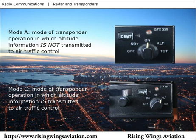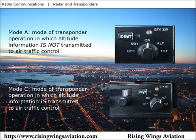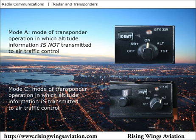Mode C refers to the altitude reporting function on many transponders. A Mode C transponder transmits altitude information to the secondary radar system in addition to the beacon code. This allows air traffic control to receive altitude updates from your airplane during the flight. Mode C is activated on most transponders by selecting the ALT setting. The ON setting transmits the beacon code without altitude information; this is known as Mode A. An air traffic controller can request a pilot to start or stop altitude reporting with the phrases "squawk altitude" or "stop altitude squawk."